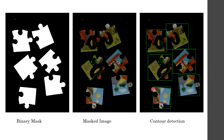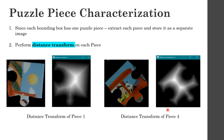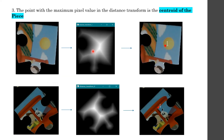For each bounding box we have one puzzle piece, so we can save the array inside each bounding box as a separate image. Once we have the image for each piece, I perform a distance transform on each piece to get the centroid, where the point with the maximum pixel value in the distance transform is the centroid.